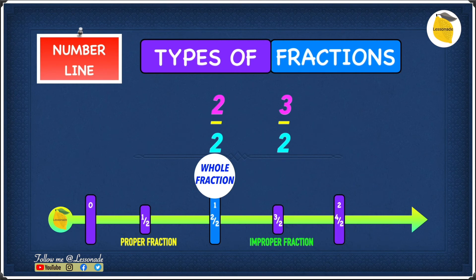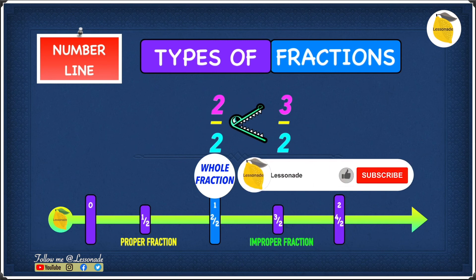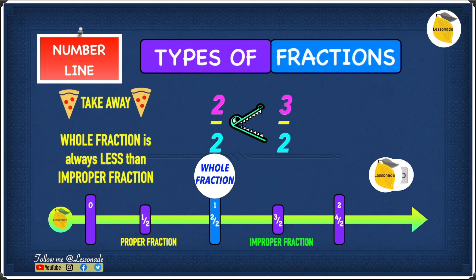Now we will compare 2 over 2 and 3 over 2. 2 over 2 is a whole fraction and 3 over 2 is an improper fraction. Since the improper fraction is further up the number line than the whole fraction, 2 over 2 is less than 3 over 2. The key takeaway is that the whole fraction is always less than the improper fraction.